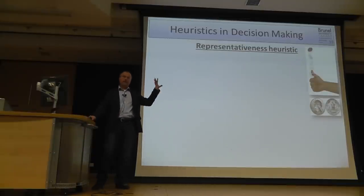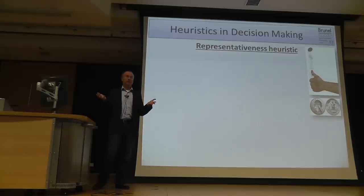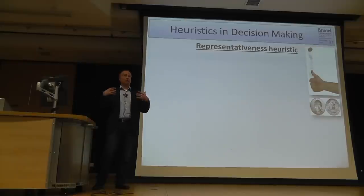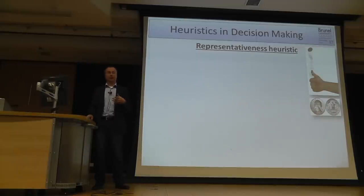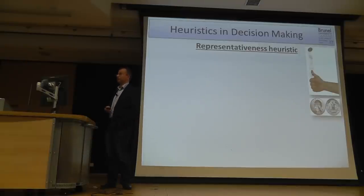So to summarize the availability heuristic: the information which is available to us influences our decisions. If information is overly presented — like plane crashes — then we take that into account and are more likely to be afraid of flying than using a car, although flying is much safer.